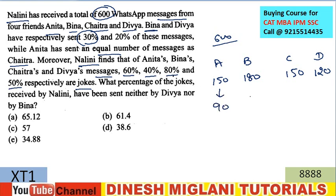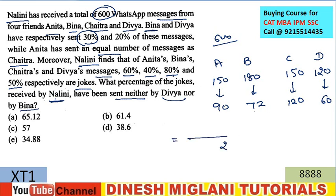Moreover, 60% of Anita's, 40% of Beena's, 80% of Chetra's, and 50% of Divya's messages are jokes. So jokes from Anita = 90, Beena = 72, Chetra = 120, Divya = 60. Total jokes = 342. The question asks what percentage of jokes were sent neither by Divya nor Beena — meaning only by Anita and Chetra: 90 + 120 = 210. So (210/342) × 100 ≈ 61.4%. The answer is B.